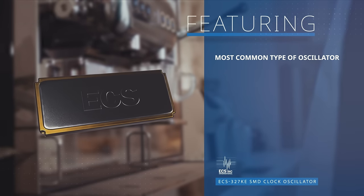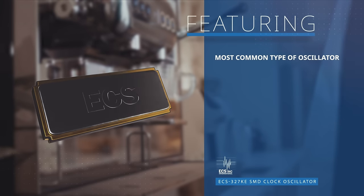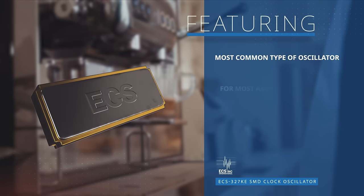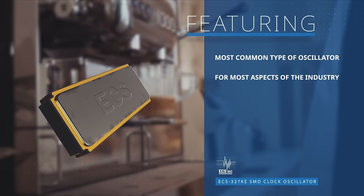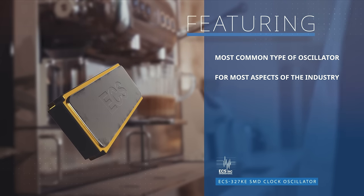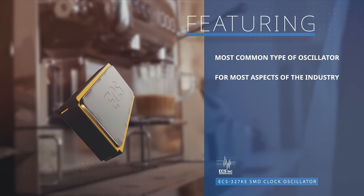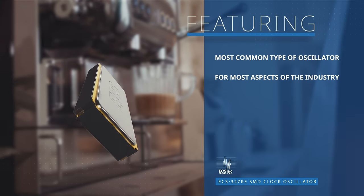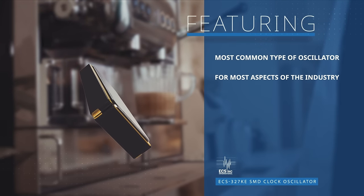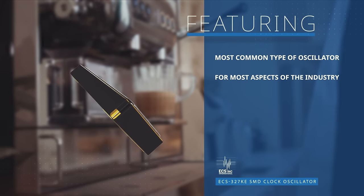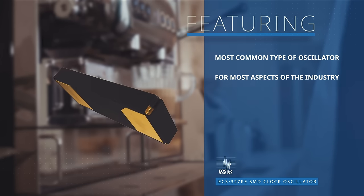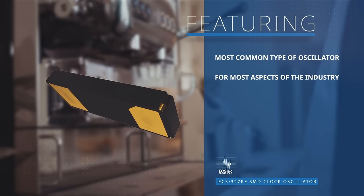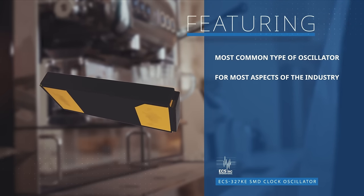The clock oscillator is the most common type of oscillator. It finds use in virtually every aspect of the electronics industry. The clock oscillator establishes a reference frequency used for timing purposes, such as the sequencing of events in a computer.